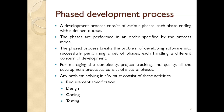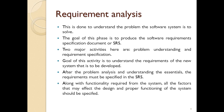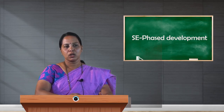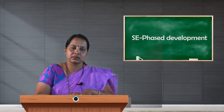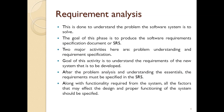The four main phases of software development are requirement specification, design, coding, and testing. The first phase is requirement analysis, where we concentrate on understanding the problem — what the problem actually is. This is done to understand what the software system is to solve. The goal of this phase is to produce the Software Requirement Specification document, or SRS.